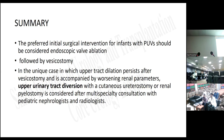In summary: the preferred initial surgical intervention for infants with posterior valves should be endoscopic valve ablation, followed by vesicostomy in unique cases where upper tract dilation persists after vesicostomy with worsening renal parameters. Upper urinary tract diversion with cutaneous ureterostomy or renal pyelostomy is considered after multi-specialty consultation with a pediatric nephrologist and radiologist.